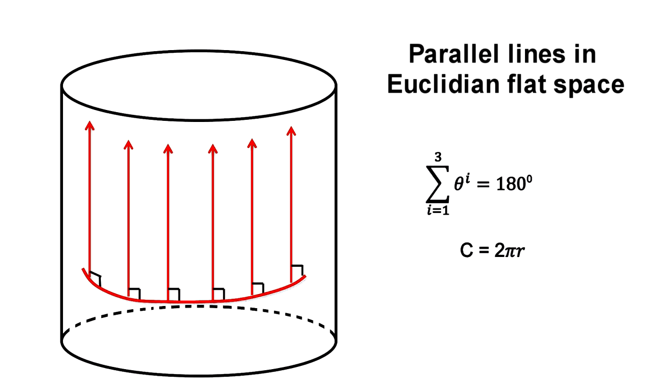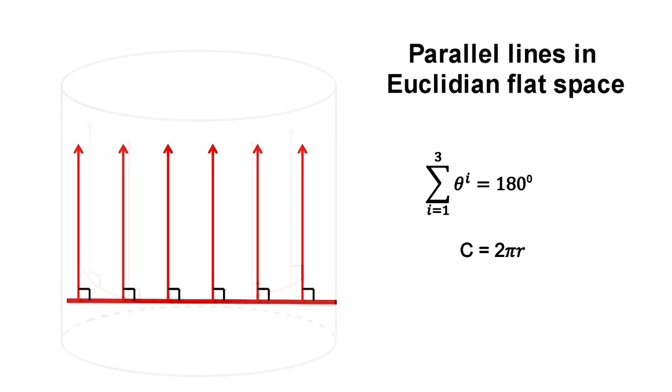Parallel lines remain parallel. The sum of the angles of a triangle is still 180 degrees, and the circumference of a circle is still 2 pi times its radius.